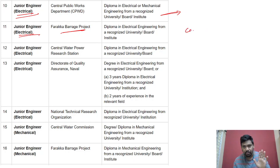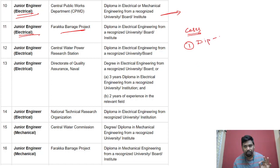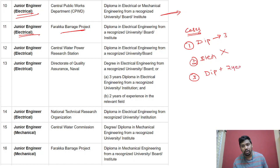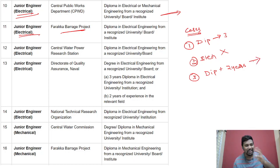There are three cases. The first case is purely diploma is available — three years diploma is available. The second case is only degree is available; diploma is not eligible. The third case is diploma plus two years experience. In this case, many are eligible.